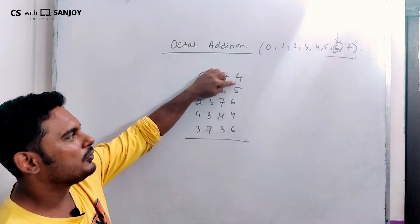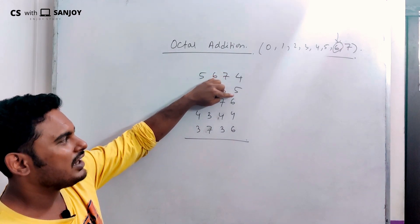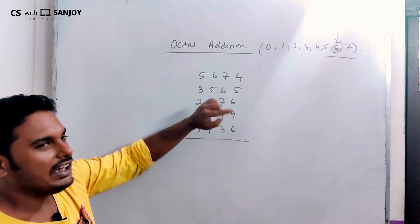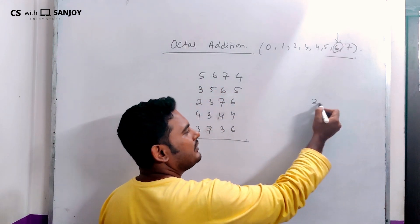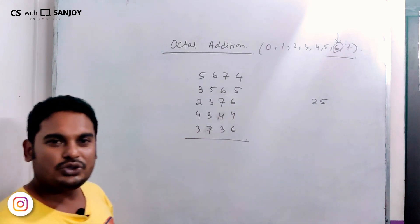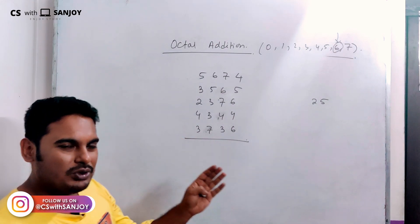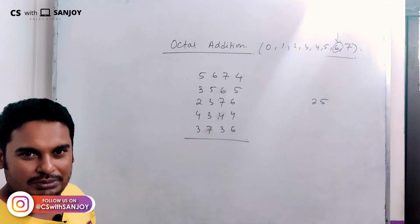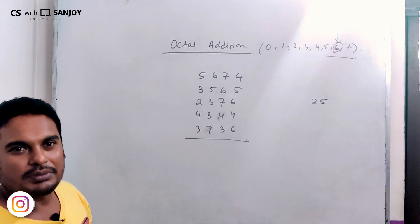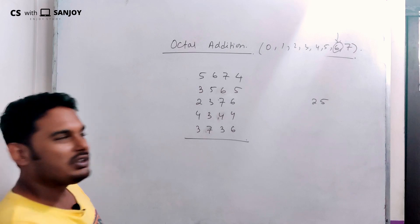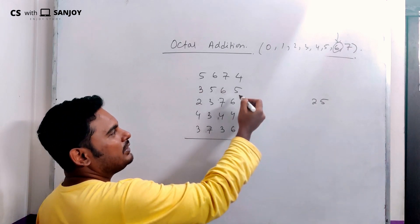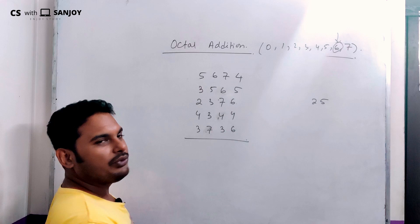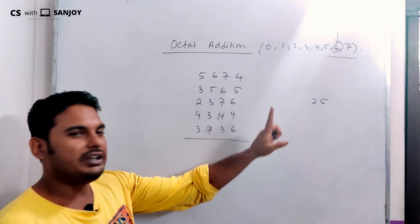We add the rightmost digits normally. 4 plus 5 is 9, 9 plus 6 is 15, and 15 plus 10 is 25. Since the base is 8, 25 divided by 8 gives quotient 3 and remainder 1, so the sum digit is 1 and carry is 3.